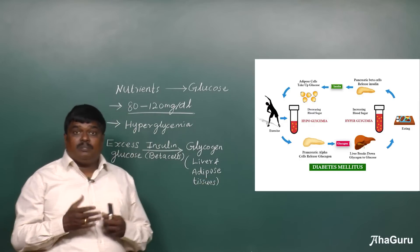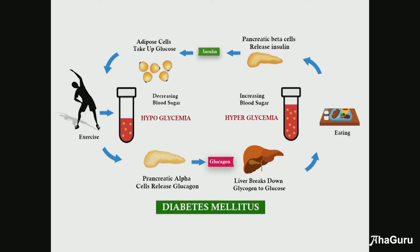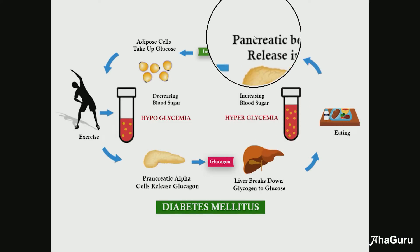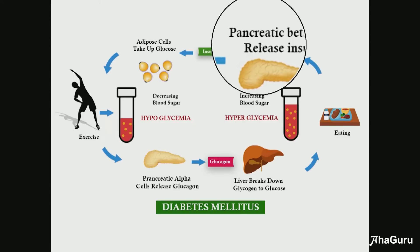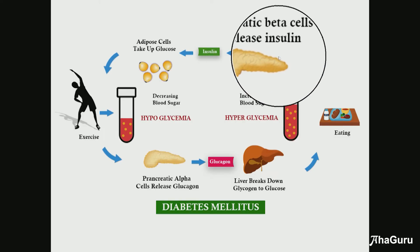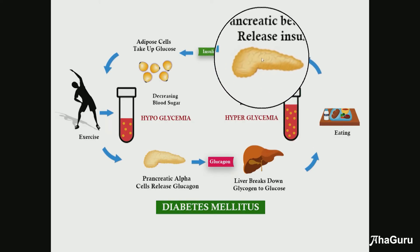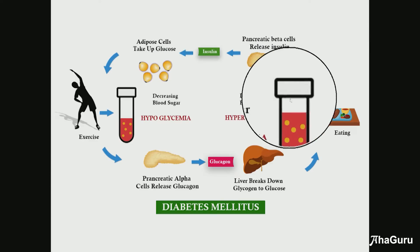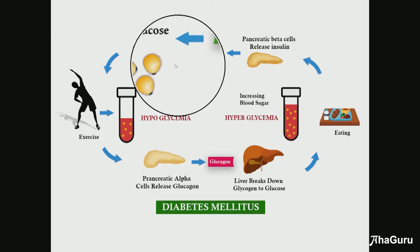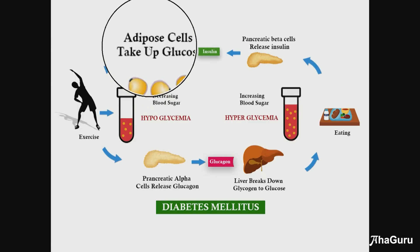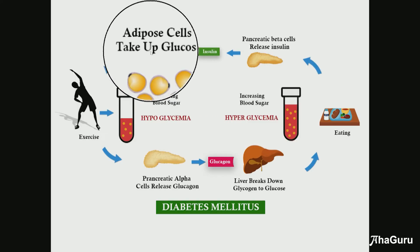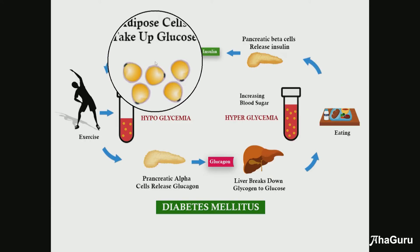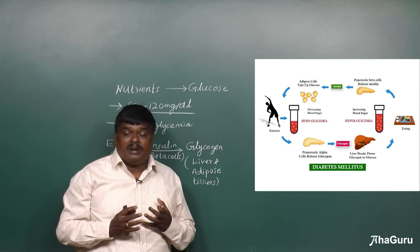This is how glucose metabolism is maintained. Whenever the blood glucose level increases, the beta cells of the pancreas release a hormone called insulin. This insulin converts the excess glucose into glycogen and stores it in adipose cells, as well as in the muscles and the liver.